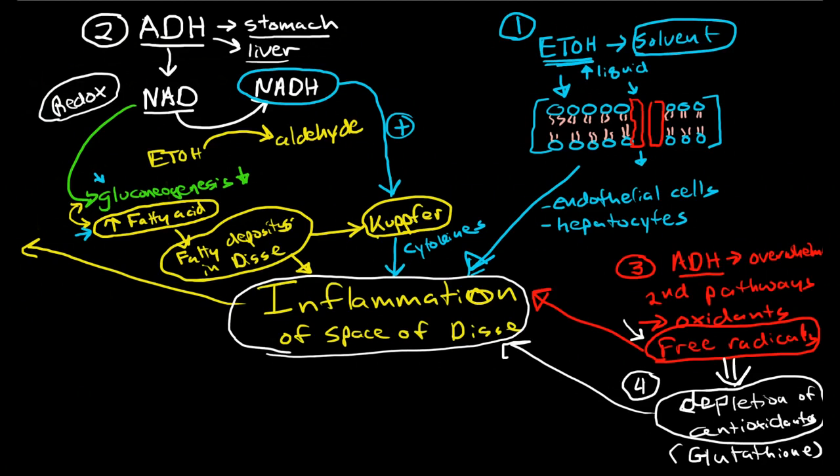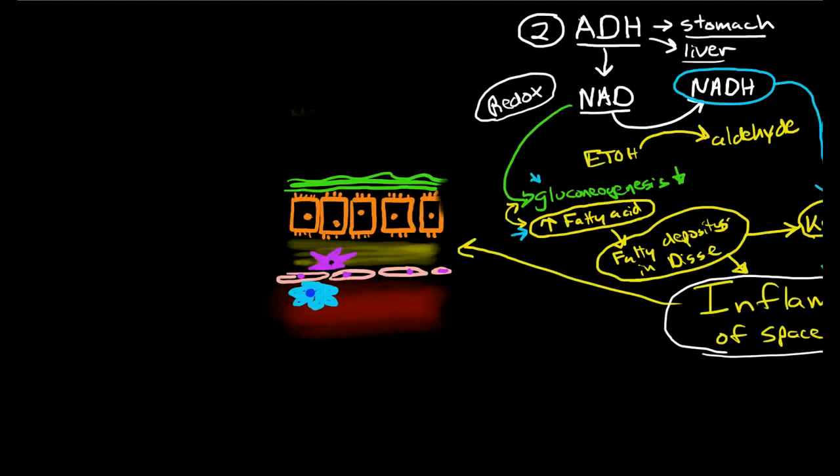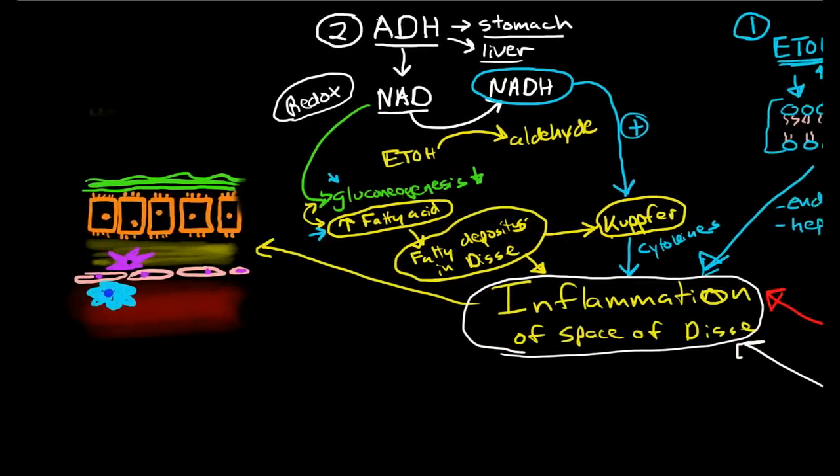So once we have the inflammation occurring in the space of Disse, what happens is, we have this peaceful little cell here. I haven't even talked about it yet. And this blue cell is a Kupfer cell, by the way. And we've already talked about how it is involved in the process of starting the process of inflammation.